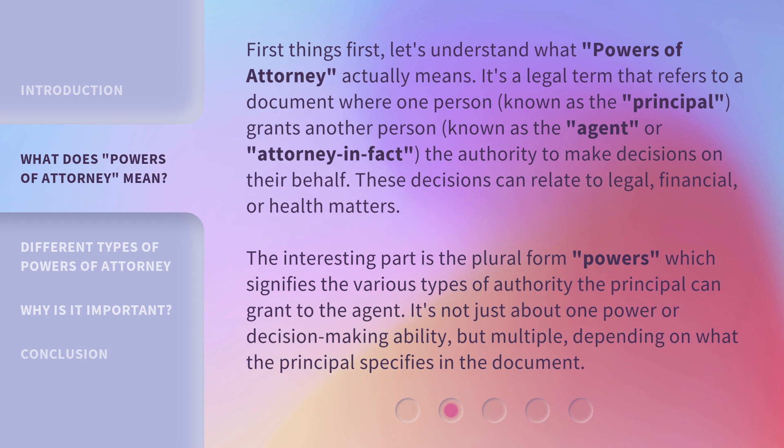The interesting part is the plural form — 'powers' — which signifies the various types of authority the principal can grant to the agent. It's not just about one power or decision-making ability, but multiple, depending on what the principal specifies in the document.